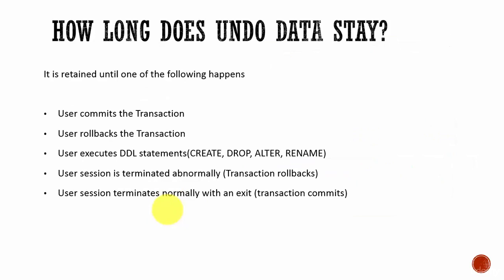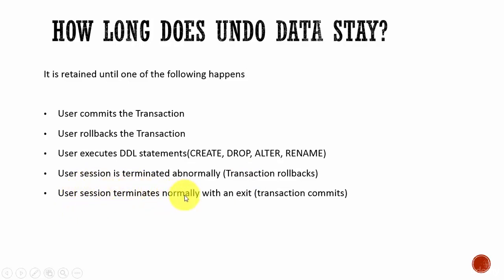The next question is: how long does this Undo data stay? Does it stay forever? The answer is no. Undo data is stored until either the user commits the transaction, the user rolls back the transaction, or the user executes a DDL statement — such as CREATE, DROP, ALTER, or RENAME — on the table for which Undo data is maintained. Also, whenever a user session is terminated abnormally, the transaction is rolled back and the Undo data is no longer retained. When the user session terminates normally — meaning you close it willingly — the transaction commits and the Undo data is erased. Until one of these scenarios happens, the Undo data is maintained. There are other ways to maintain Undo data for a longer time, which will be discussed in later sessions.